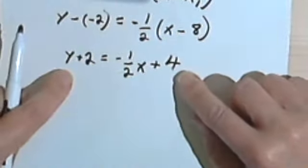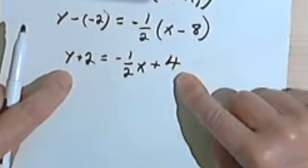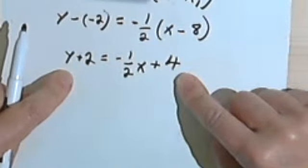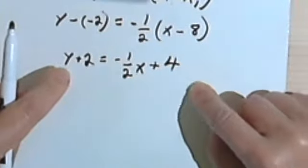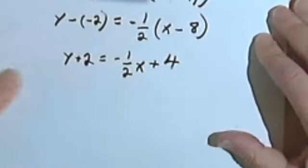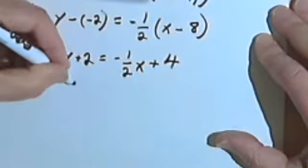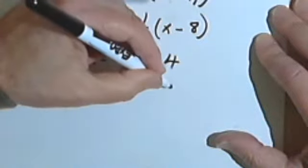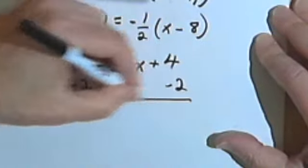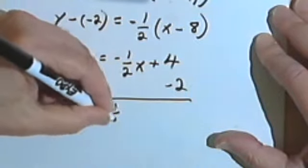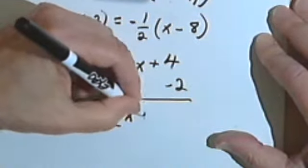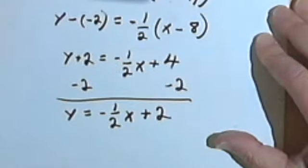And again, I can leave it like this in point-slope form, or I can turn it into a y equals mx plus b form by isolating this y. So let's do that. I'll subtract 2 from both sides. And I'm going to get y equals negative one-half x plus 2.